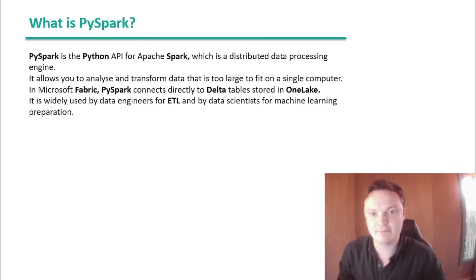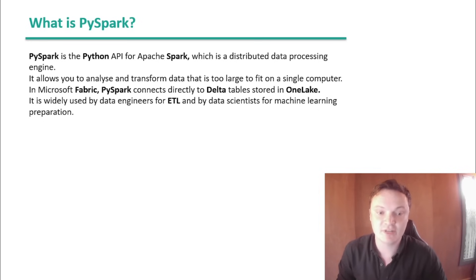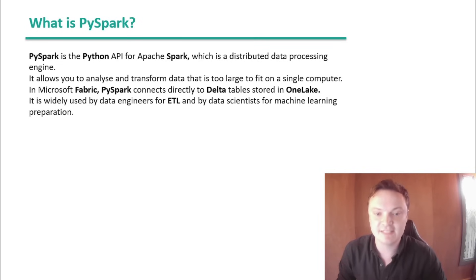PySpark is the Python API for Apache Spark, which is a distributed data processing engine. It allows you to analyse and transform data that is too large to fit in a single computer. In Microsoft Fabric, PySpark connects directly to delta tables stored in the lake. It is widely used by data engineers for ETL (extract, transform, and load) and by data scientists for machine learning preparation.